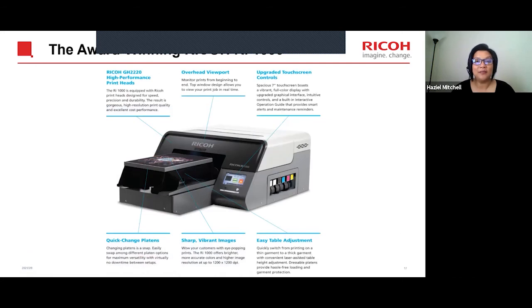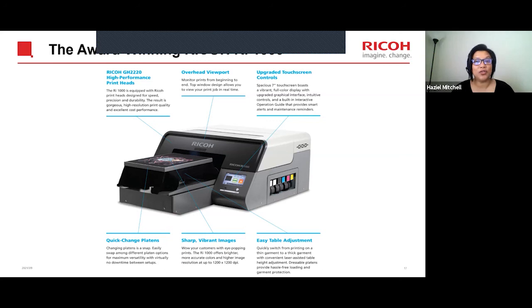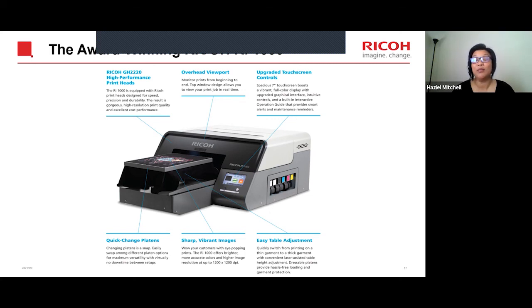The RI 1000 is very similar to the RI 2000 and still prints very fast. It uses the same print head as the RI 2000. You have the overhead viewport, upgraded touch screen with a 7-inch LCD screen, quick-change platens, sharp vibrant images at 1200 by 1200 DPI, and easy table height adjustment. With the RI 1000, it is walk-up ready — the only walk-up ready printer out there. Whenever you're ready to use it, you simply walk up and start printing.